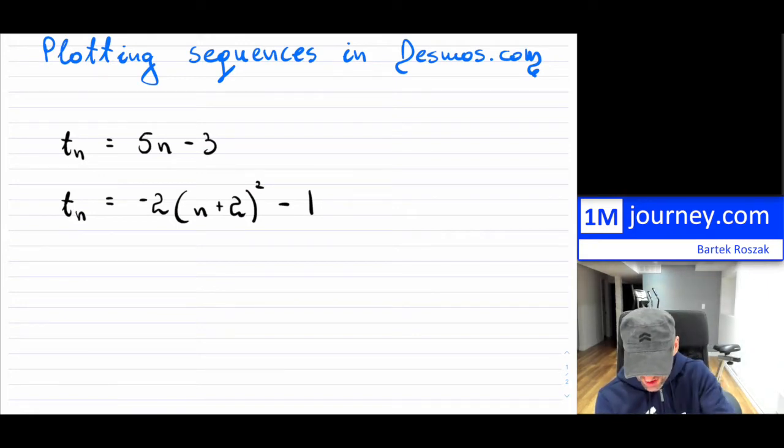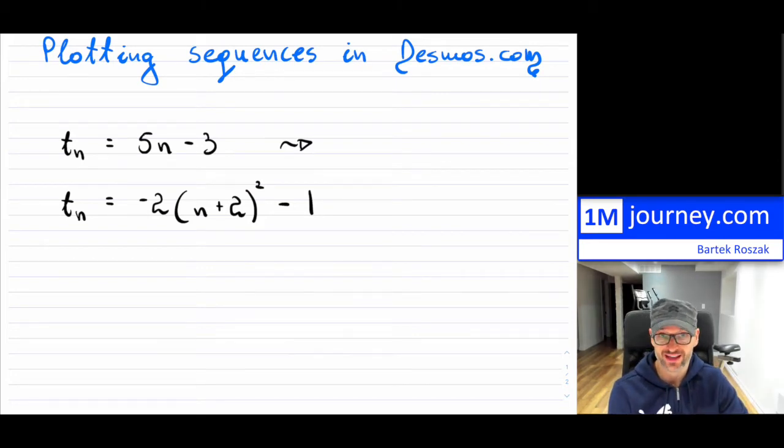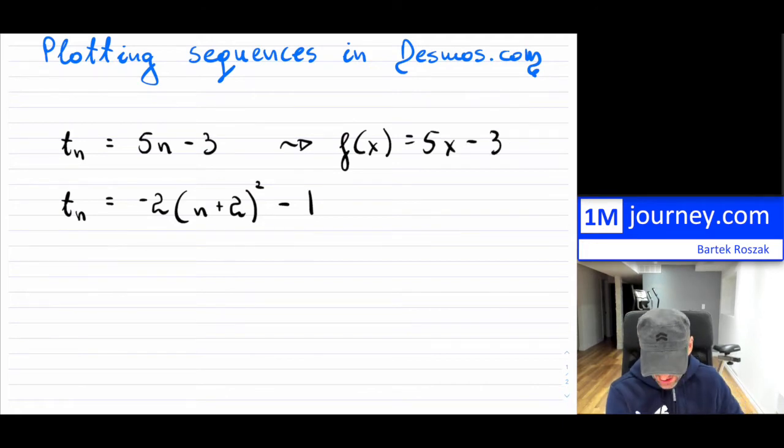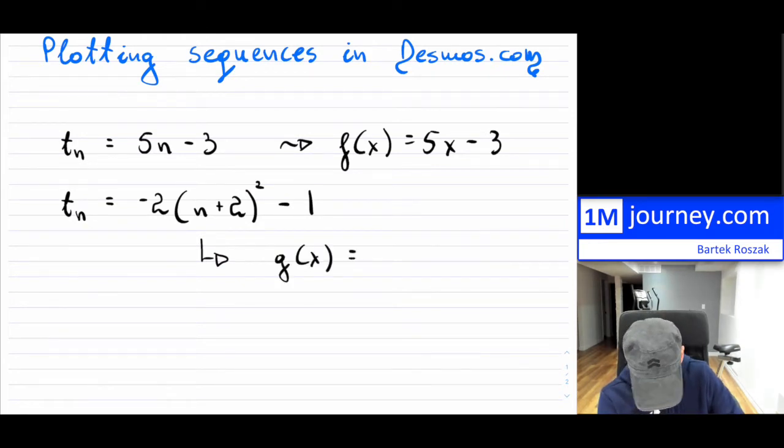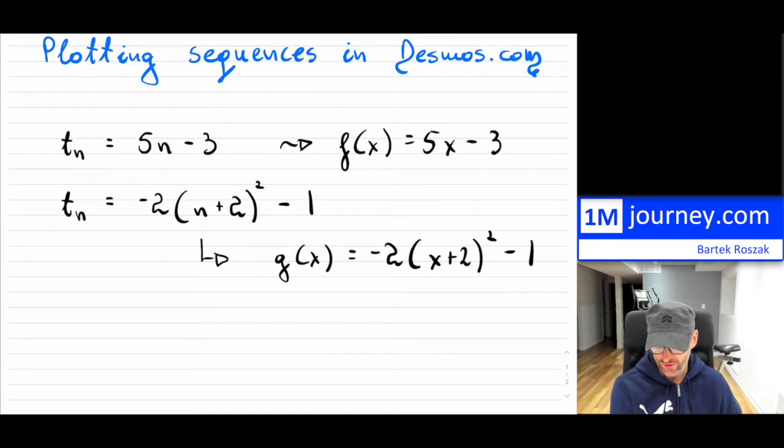So here are two sequences. I want to take these sequences and show you what you do in Desmos and how to set it up. The first thing is take your sequence or your discrete function, and I'm going to rewrite it. Instead of n, I'm going to use x because Desmos likes that. So let's call this one f(x) equals 5x minus 3. I'm basically transforming this into a function first.